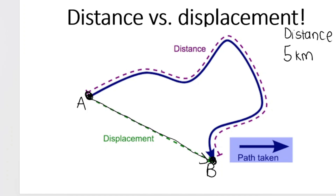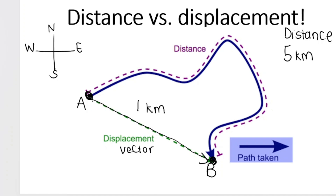We could work that out and say it's one kilometer, but remember displacement is a vector, which means it needs a direction. We can give this a rough direction using compass points — north, east, south, west. Take a look at how this arrow is pointing: it's pointing down and to the right, or in other words, southeast. So a rough direction would be one kilometer southeast. We can work out a more accurate direction using an angle — if I knew this angle, I could say it is 43 degrees south of east, but we'll get to that at a later stage.